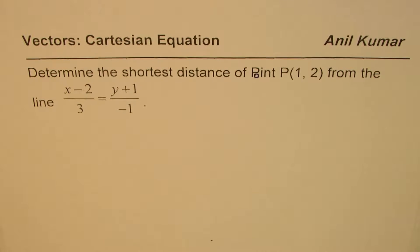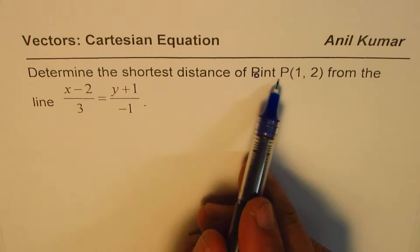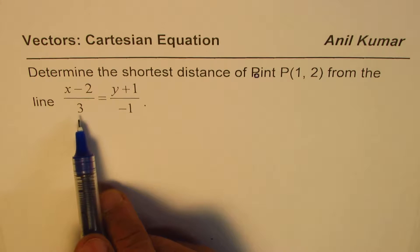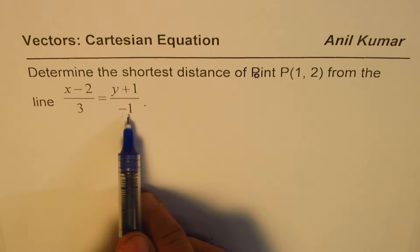I am Anil Kumar and in this video we will discuss how to find the shortest distance of a point from a given line. The question here is: determine the shortest distance of point P(1, 2) from the line (x - 2)/3 = (y + 1)/(-1).